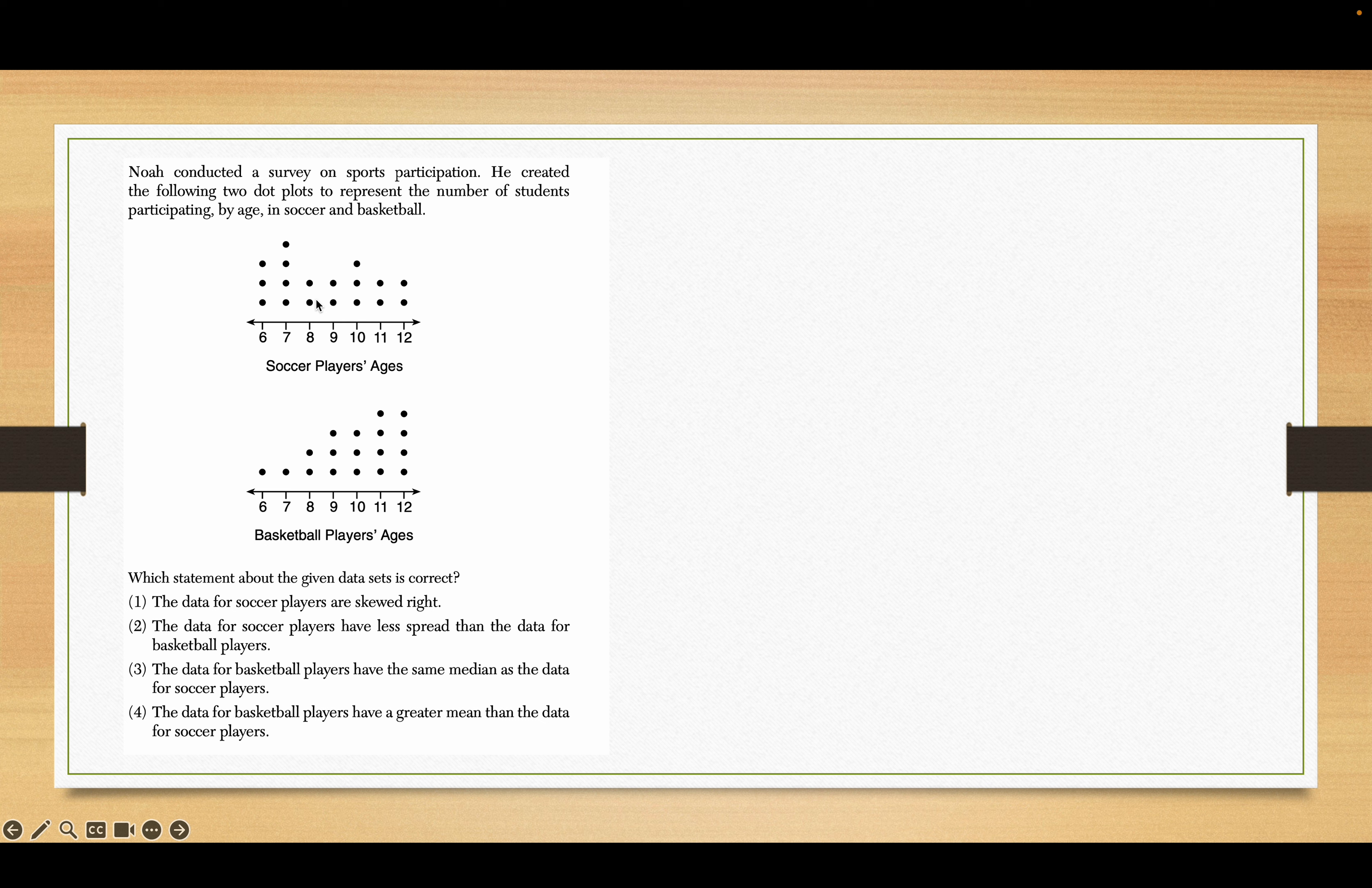Give this one a try. Which statement is correct - namely that the data for basketball players have a greater mean than the data for soccer players. If you look at the soccer players, it's mostly spread out around this middle here. If you look at the data for the basketball players, everything's on the right which is the higher end of it, so therefore we expect that to have a higher mean.